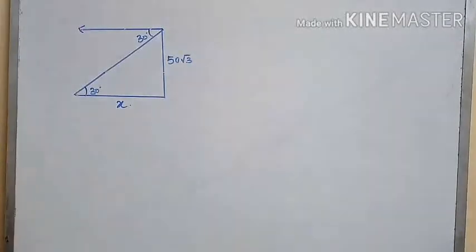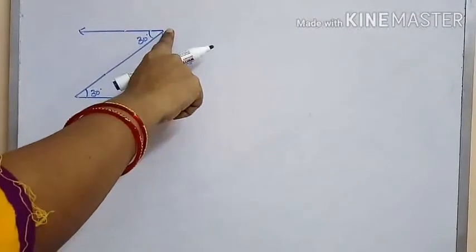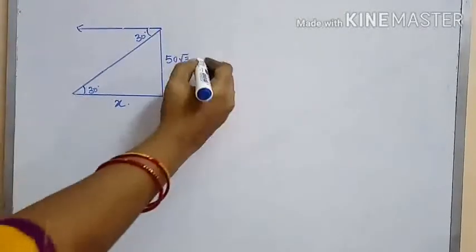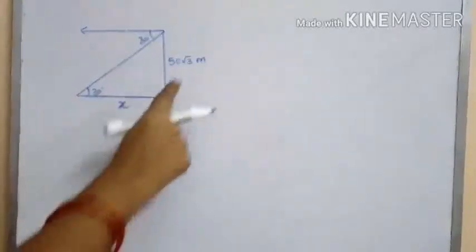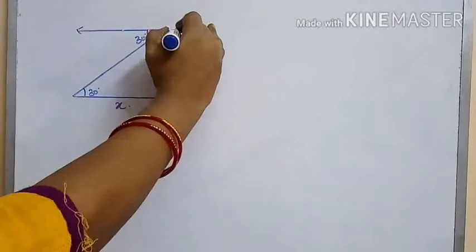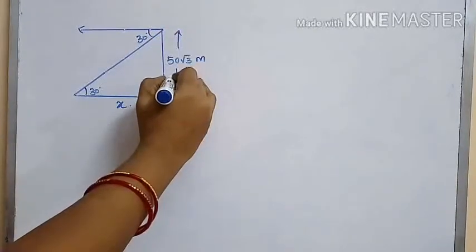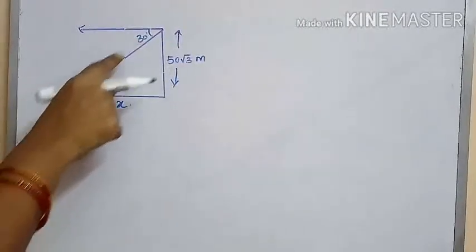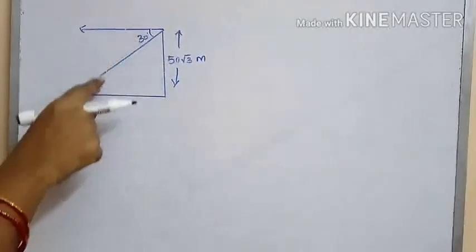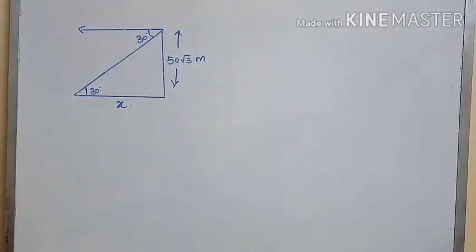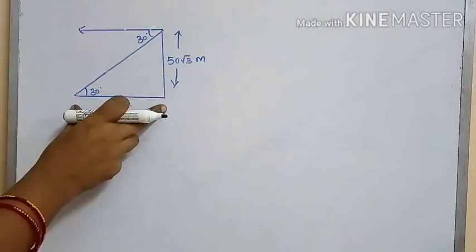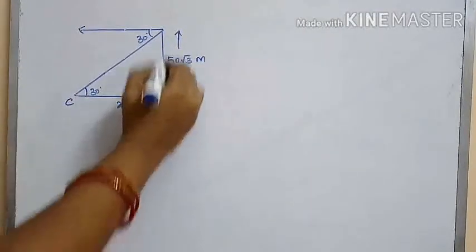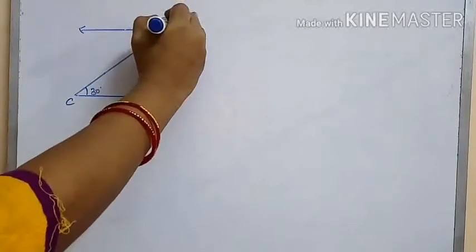Observe this diagram. This is the top of the rock, 50√3 meters high, and from the top, the car is observed at an angle of depression of 30 degrees.